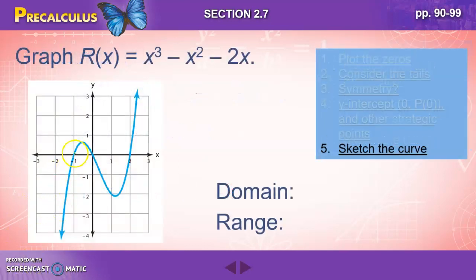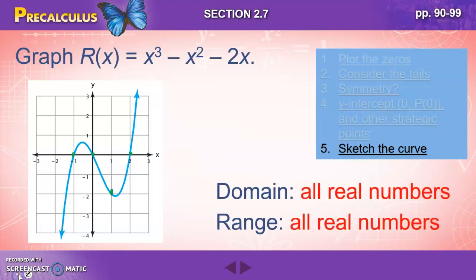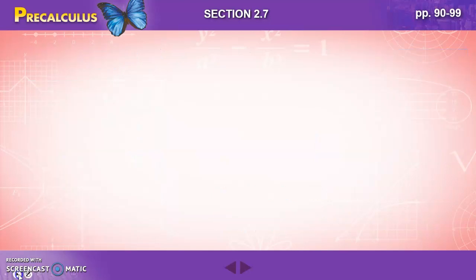So graphing our points here, we have our zeros, zero, and zero. And when we plugged in one, we get negative two. And so we're going to sketch what that might look like with left tail down and right tail up. This is not exact. It's just giving us a general idea. Our domain is all real numbers and our range all real numbers.